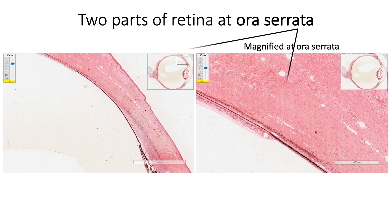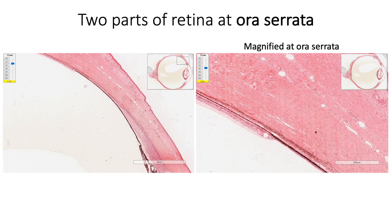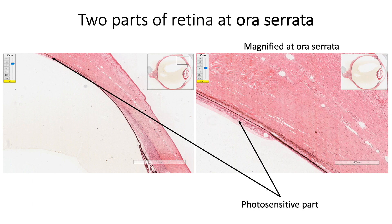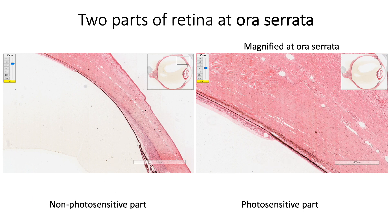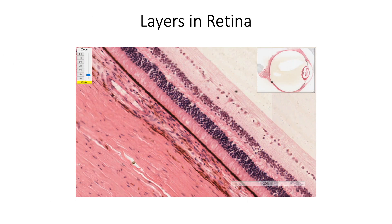Retina is divided into two parts at the ora serrata. There is a posterior photosensitive part, which acts as a transducer converting light energy into electrical impulse, and an anterior non-photosensitive part, which forms the posterior epithelium of the ciliary body and iris. From outside inwards, retina shows 10 layers.